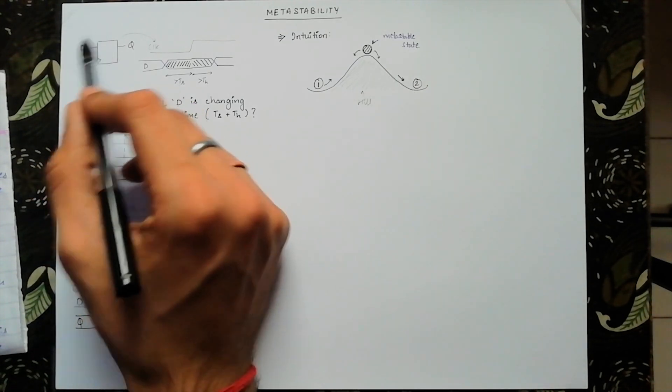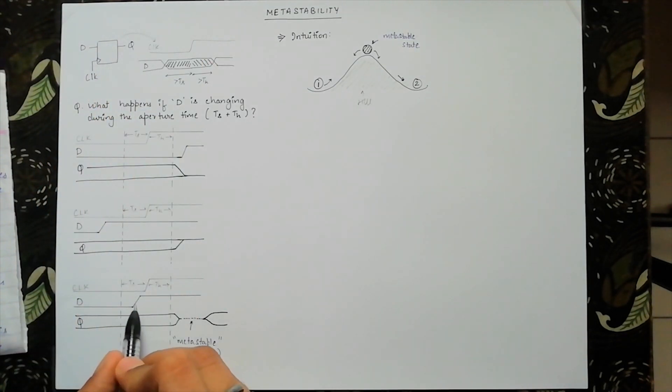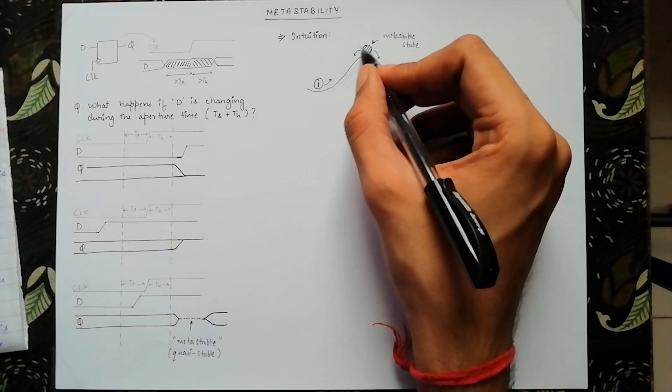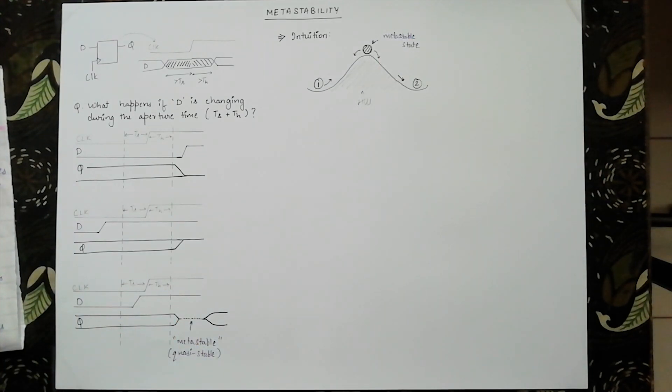Same goes true for any bistable device like flip-flop. The flip-flop must go through a metastable state when transitioning from one stable state to another. And transitioning during the aperture time can be compared to reaching and stopping at the top of the hill where you know that the ball will eventually fall but you don't know the exact amount of time after which the ball will fall.